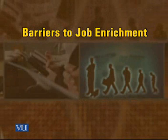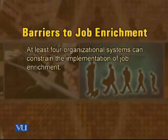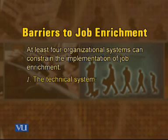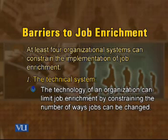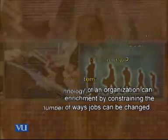Now let's look at the barriers to implementing these steps. At least four organizational systems can constrain job enrichment. The first is the technical system — technology can limit job enrichment by constraining the number of ways jobs can be changed. If someone is on an assembly line and we rotate them from one boring job to another with no growth potential, we cannot truly enrich the job. There are embedded limitations within the technical system that create this barrier.